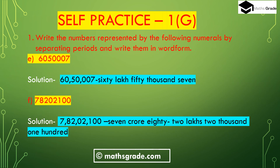Part (e): the number is 6050007. We have to write it separating the periods and in word form. In the Indian system of numeration, starting from the right we place 3 digits — 007 is the hundreds place — then 50 in the thousands place (2 digits), then 60 in the lakh place (2 digits). In word form it will be 60 lakh 50 thousand 7.